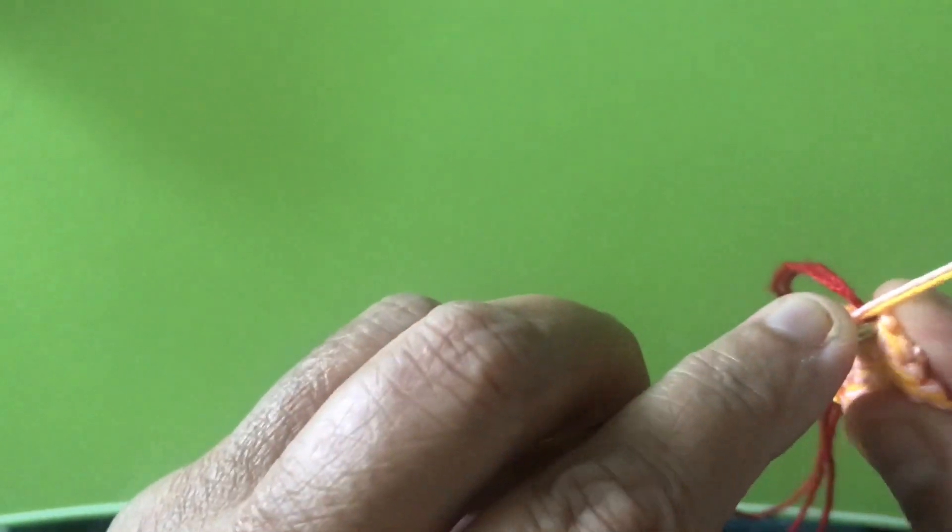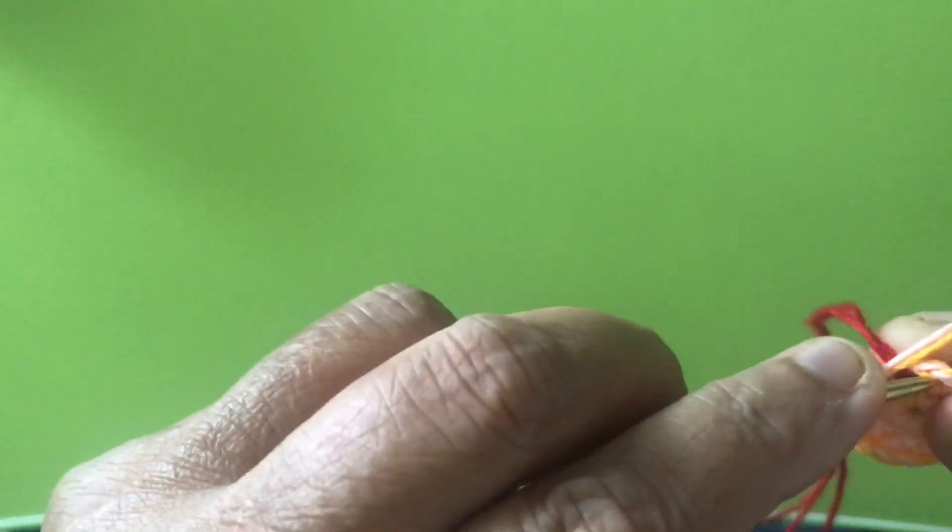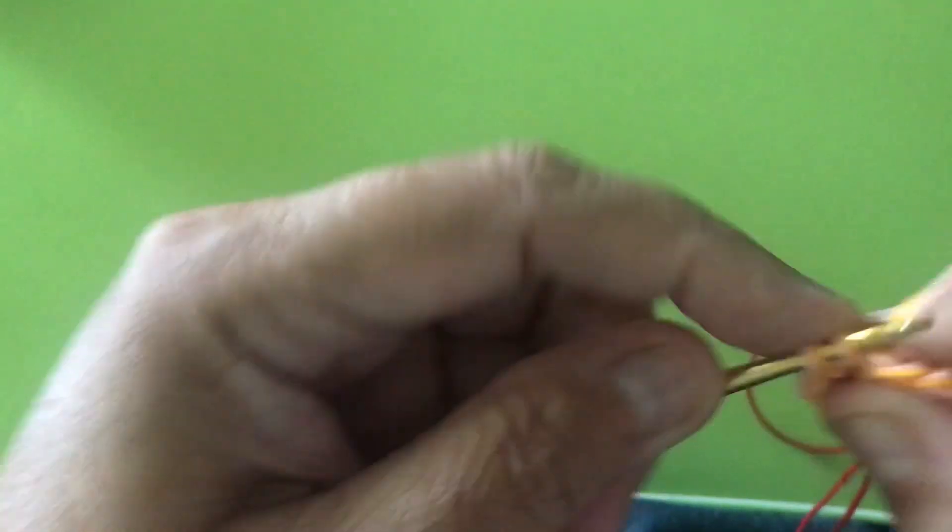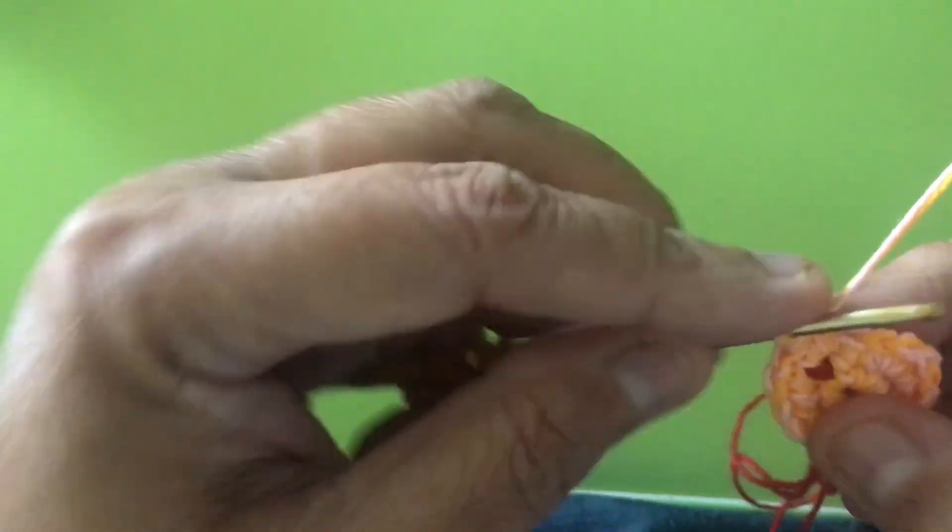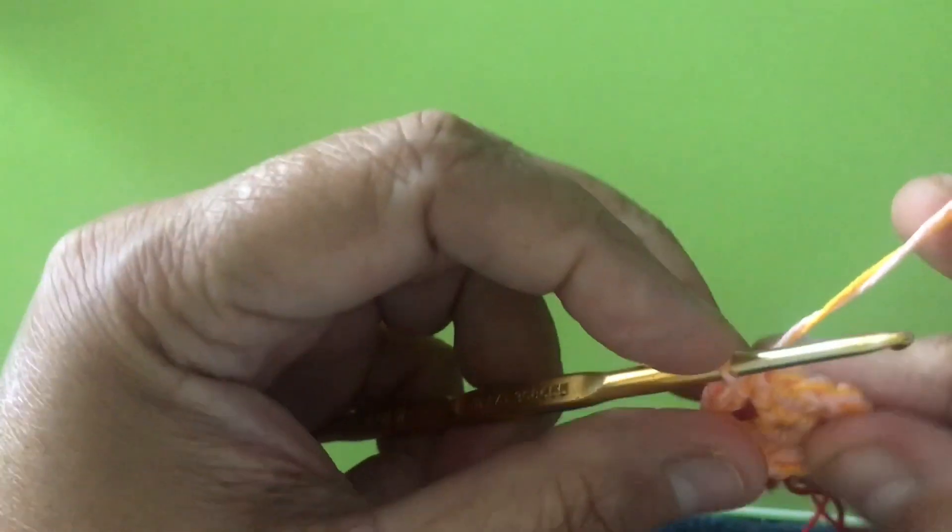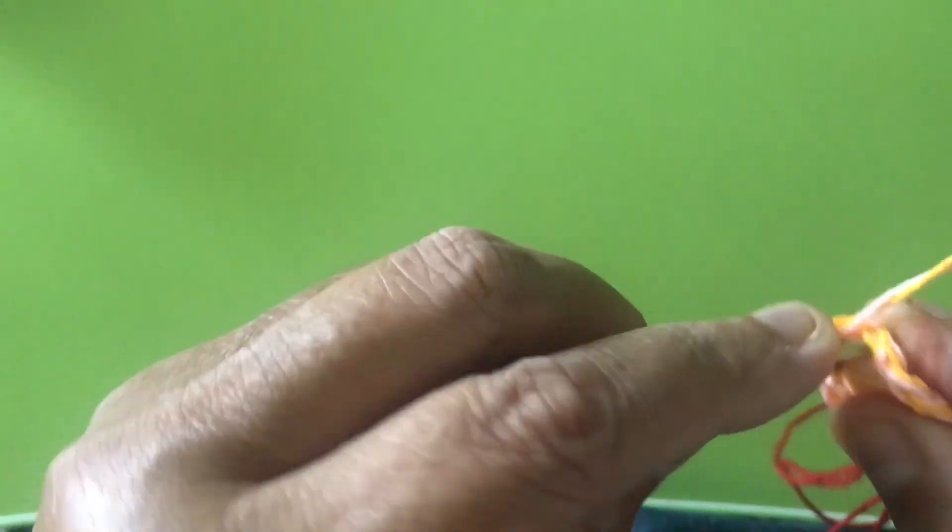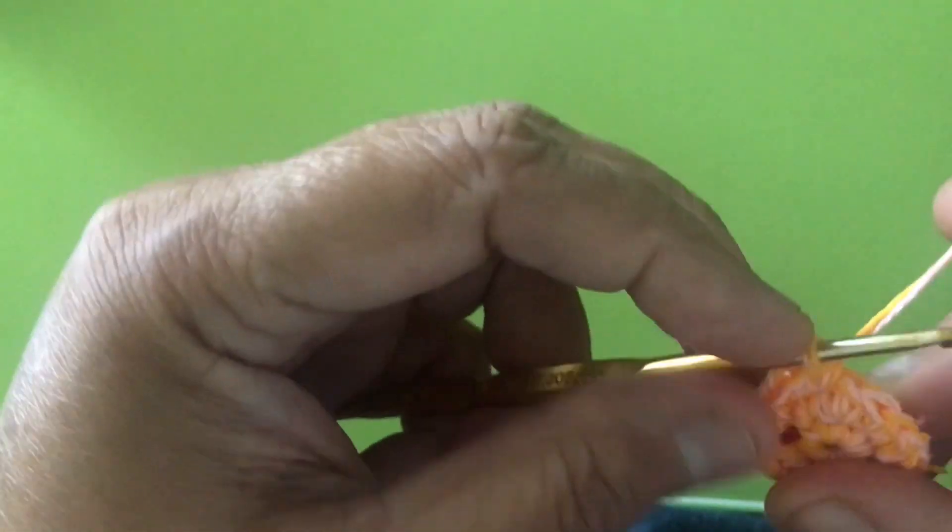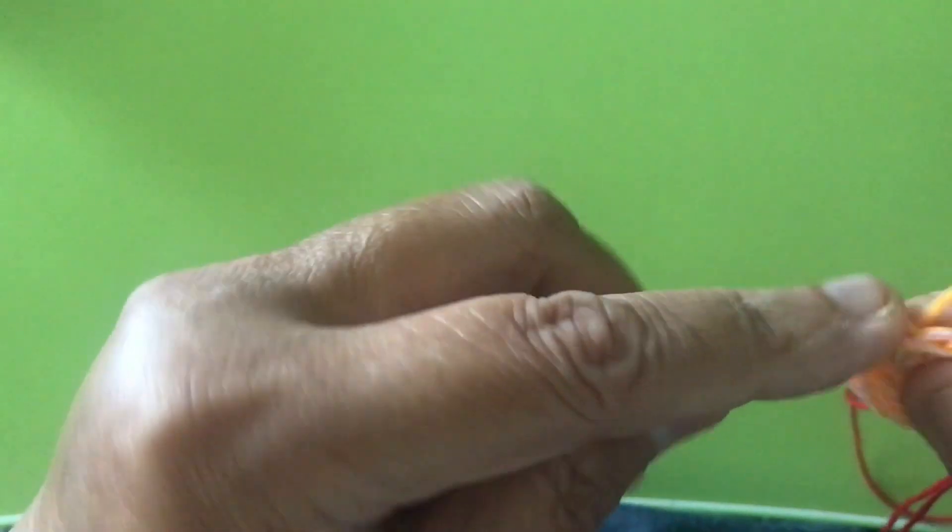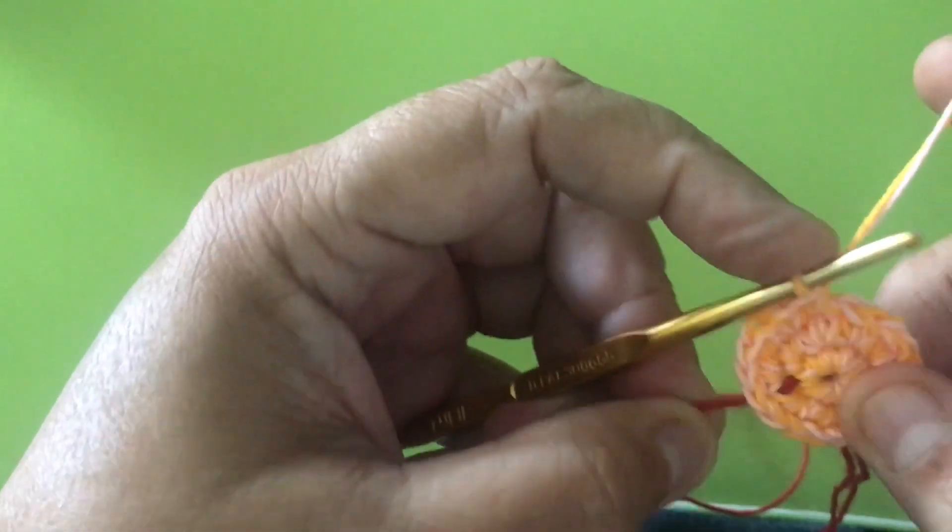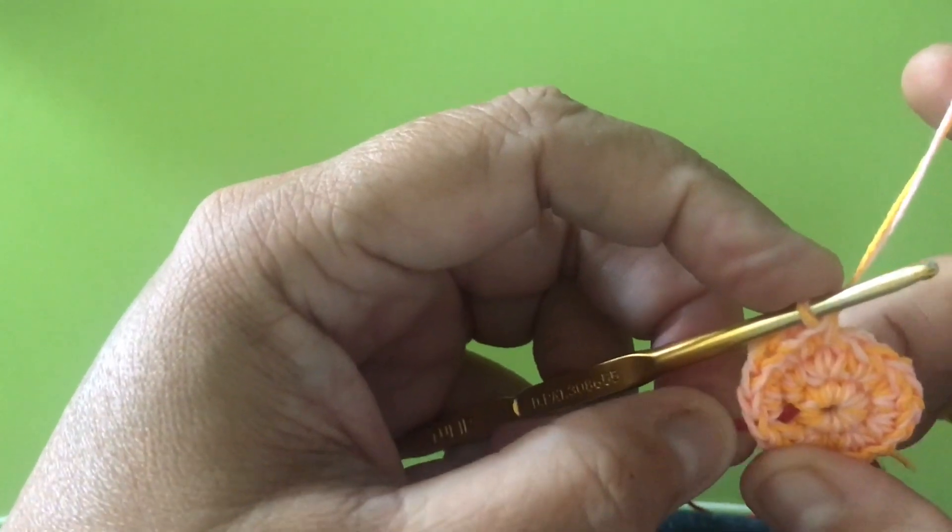This is the third round. Here increase. Increase, increase. Now the same chain and then one, and then increase. Here next one, and then one. Until the red color or green color marker.